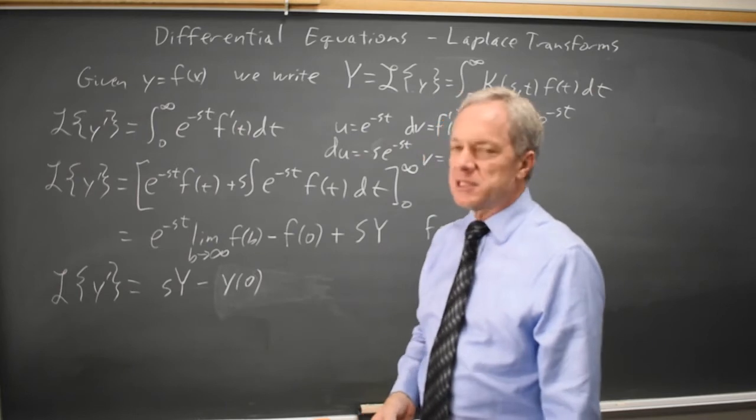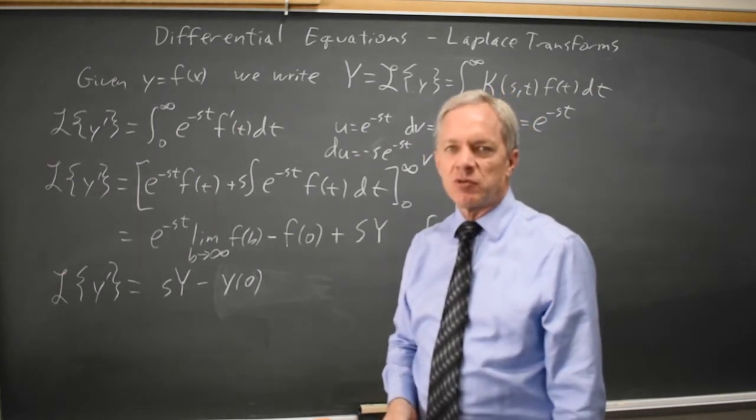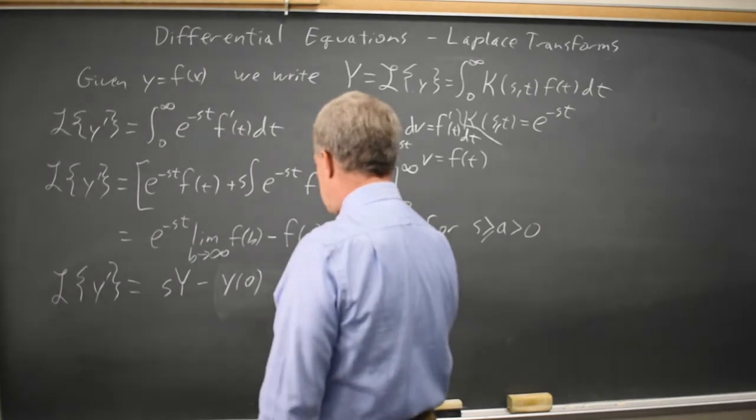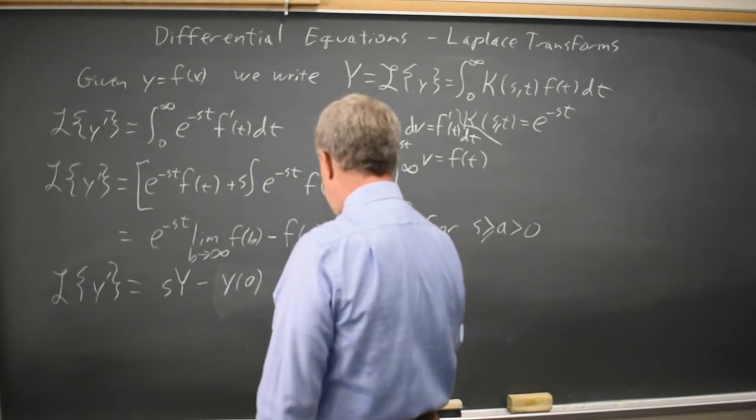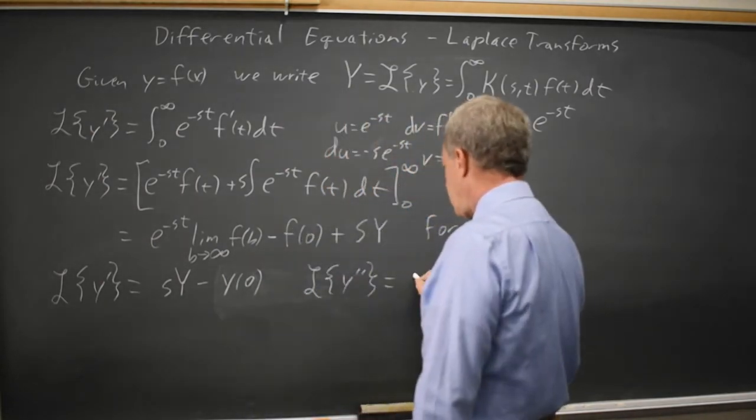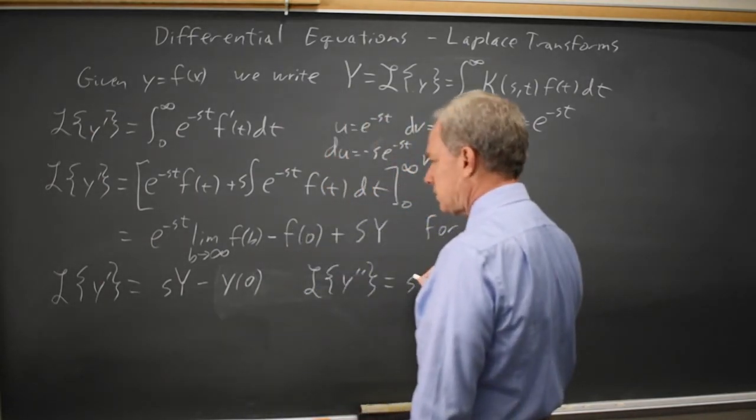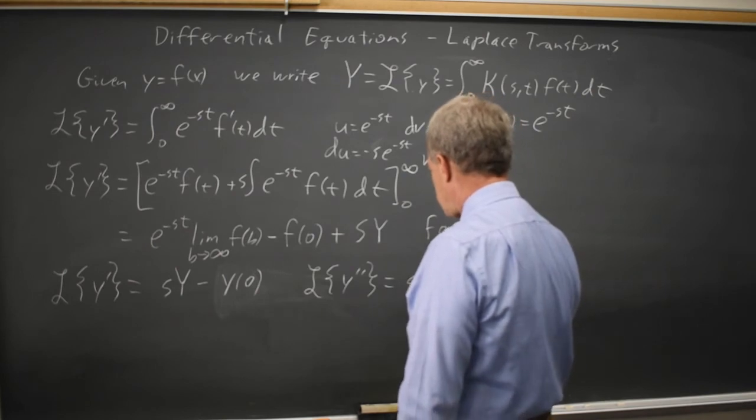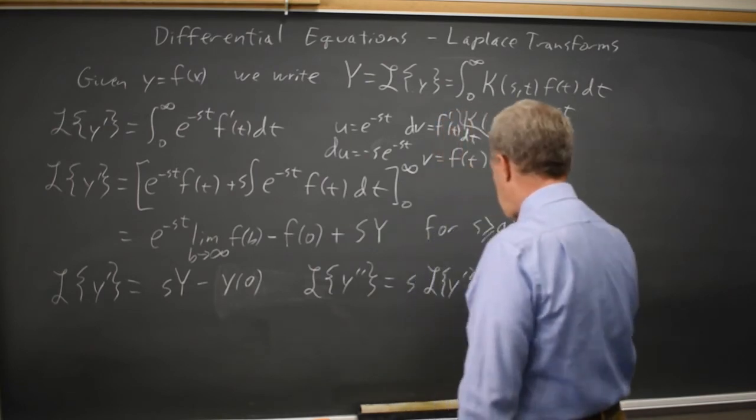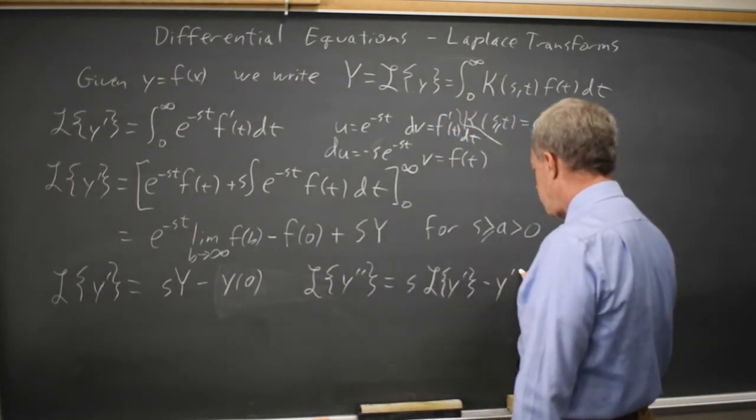So if you apply the same method to find the transform of y double prime, that is s times the transform of y prime minus y prime of 0.